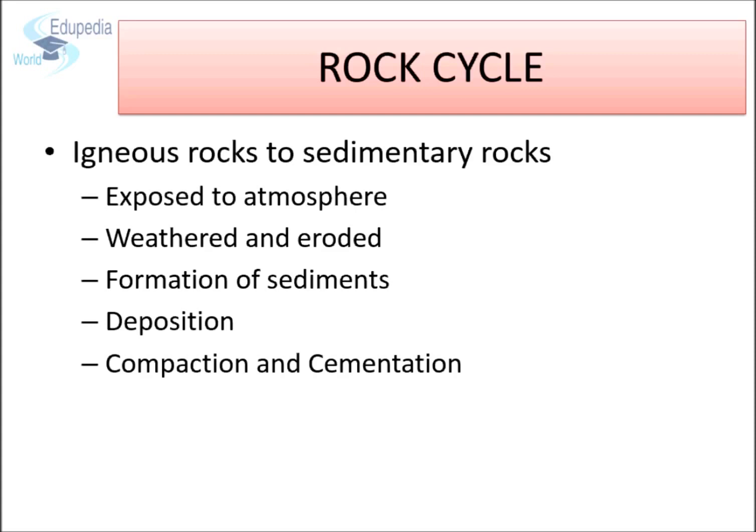Let's look at how igneous rocks convert to sedimentary rocks. In the primitive earth, with the passage of time, the atmosphere formed and it began to thrash the rocks exposed on the surface and break them into smaller pieces. These rocks were further broken down to form sediments and taken from one place to another by dynamic agents like rivers, wind, and glaciers. Furthermore, these sediments got compacted and cemented to form new rocks. This is how igneous rocks turned into sedimentary rocks.